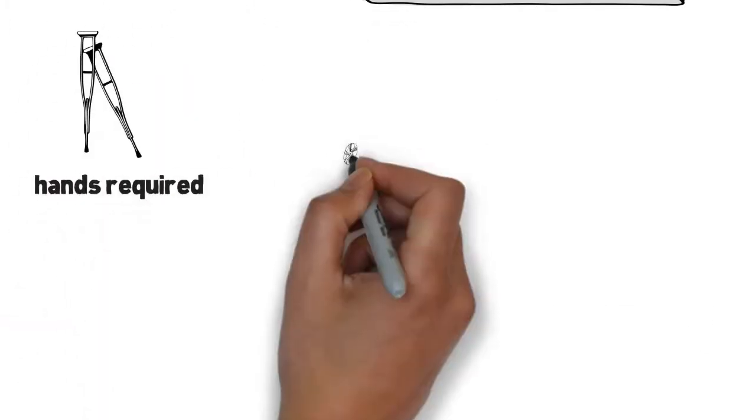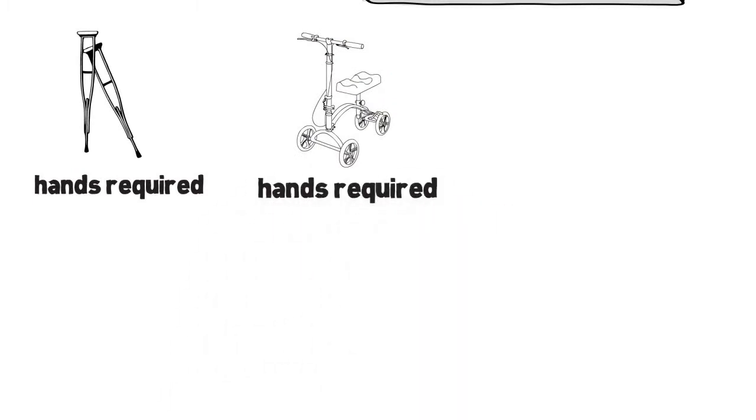Standard crutches use your hands and arms to support your weight. The iWalk crutch uses your leg, which frees up your hands and arms to do other things.